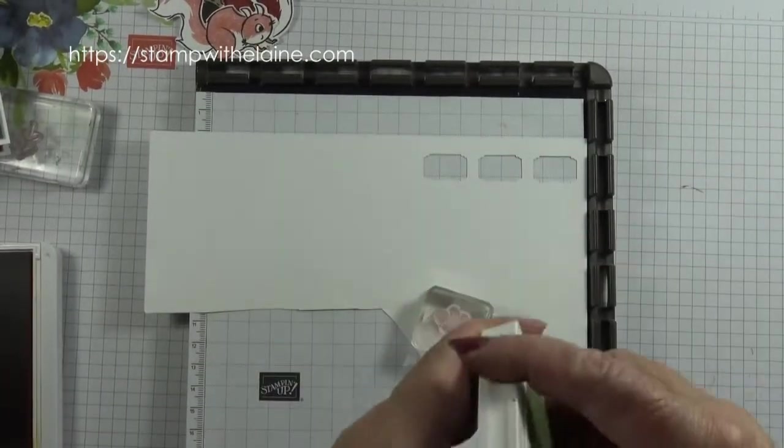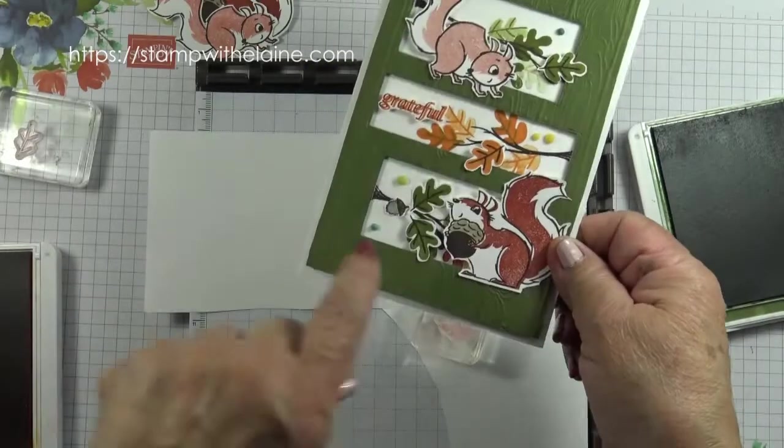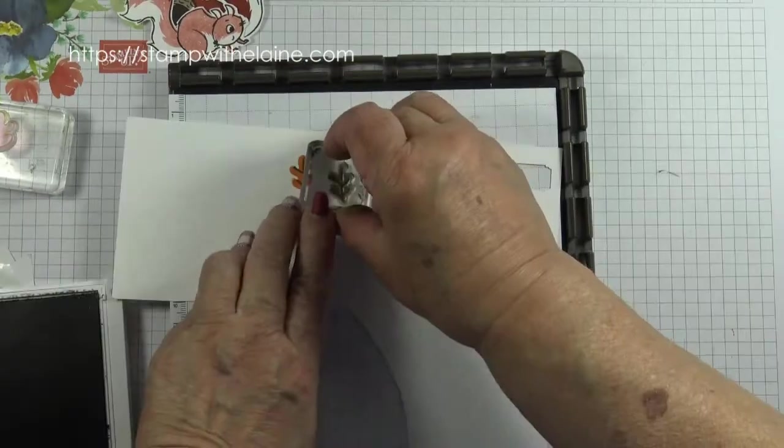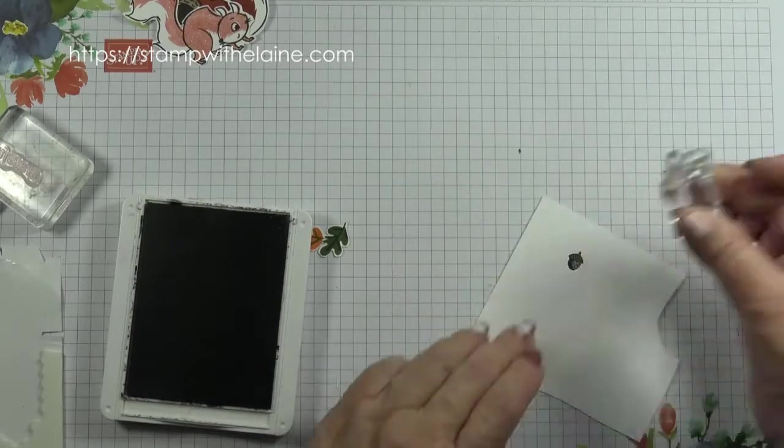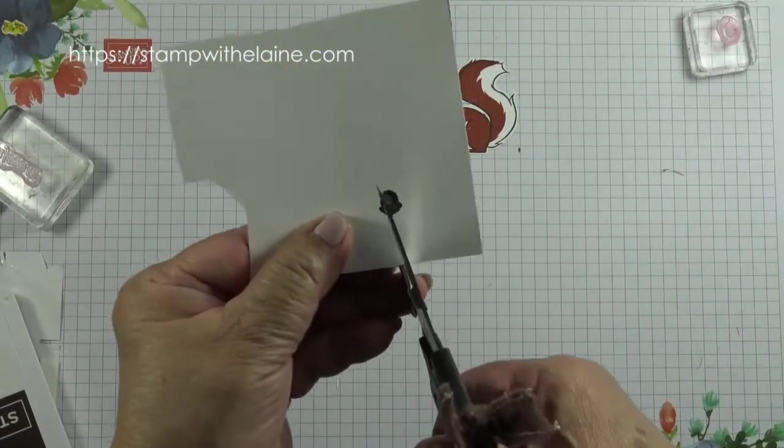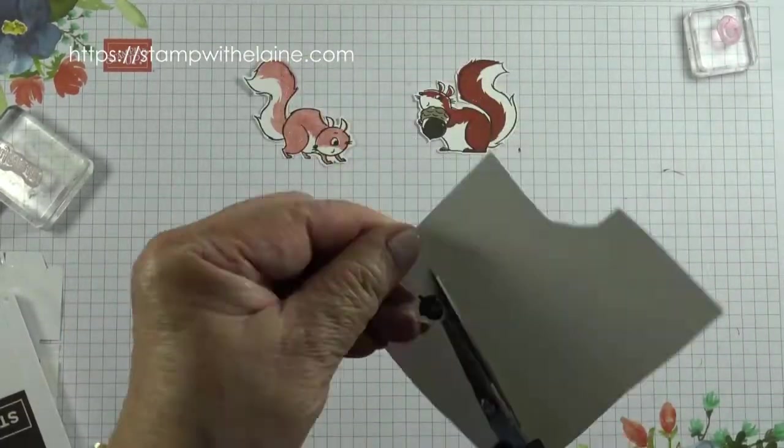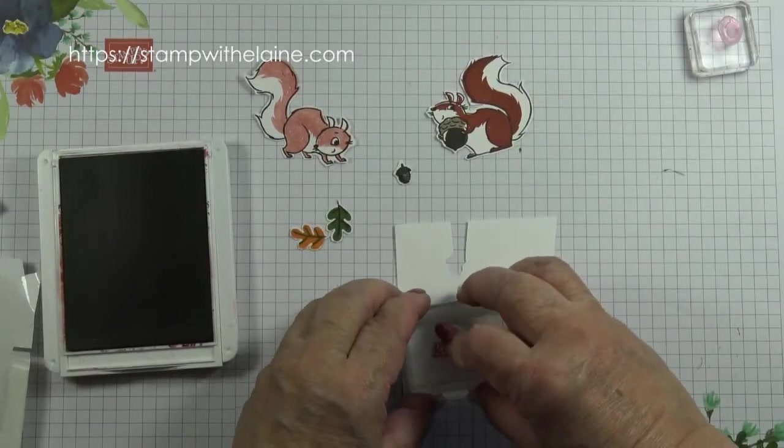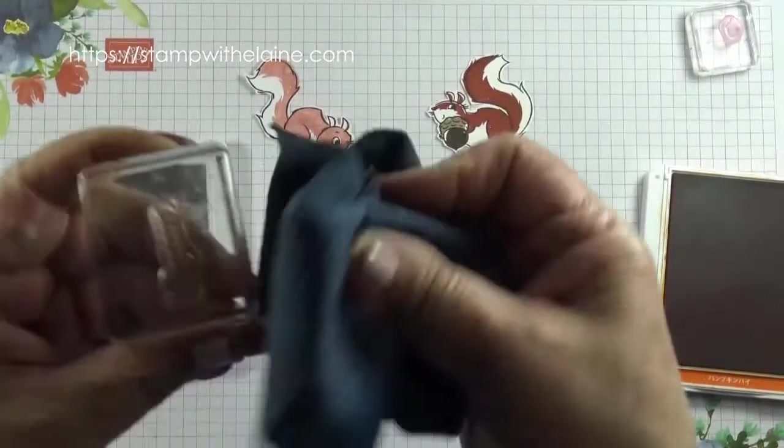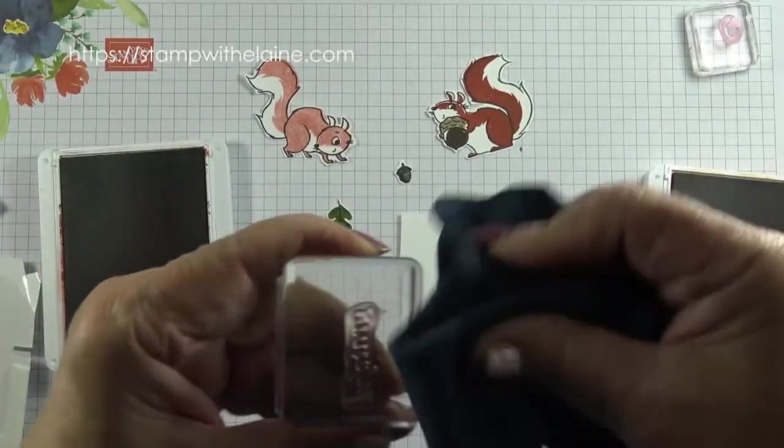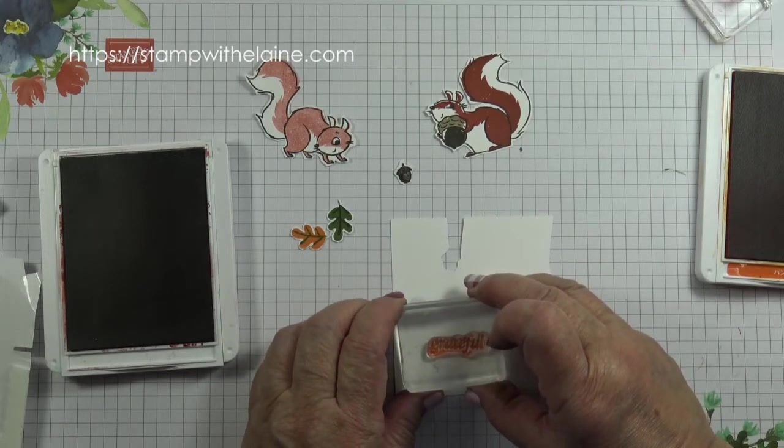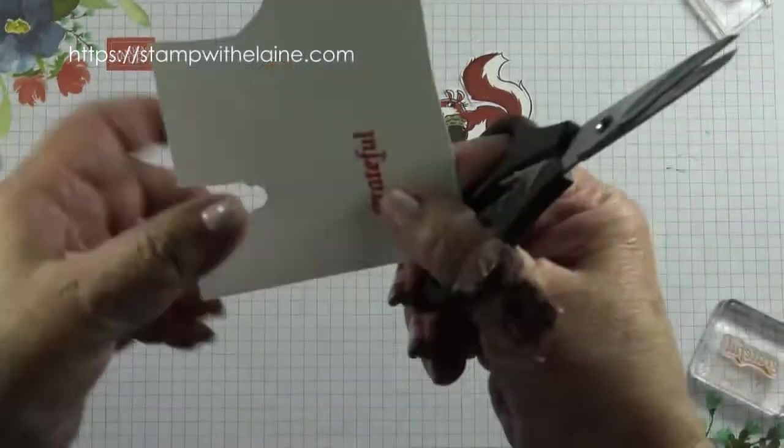I'm going to stamp some extra leaves to embellish with like that. I'm going to also stamp a little acorn from the cottage wreath stamp set and fussy cut that too. I also want to stamp my greeting and I'm going to create a shadow. So remember to clean your stamp before you use another ink. Now this is pumpkin pie and I'll just stagger it a little bit and I'll fussy cut this too.